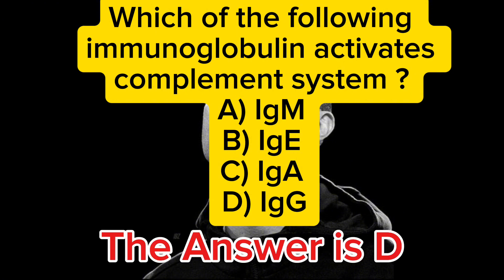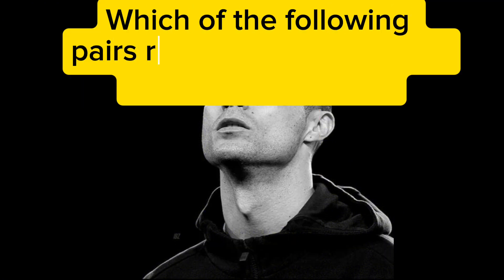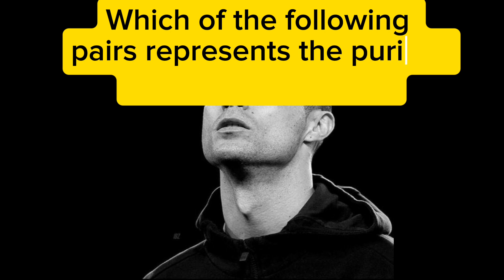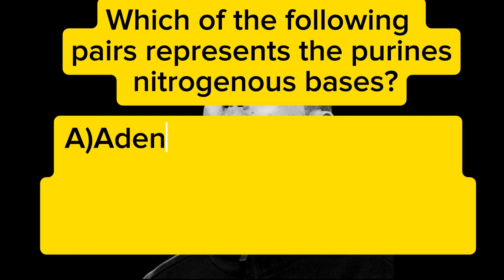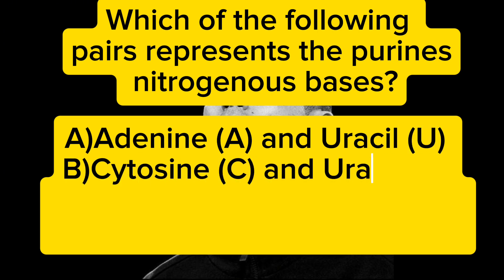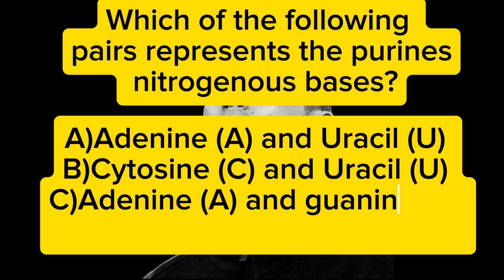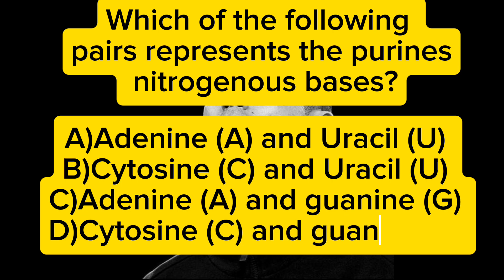Which of the following pairs represents the purine nitrogenous bases? A) adenine and uracil, B) cytosine and uracil, C) adenine and guanine, D) cytosine and guanine. The answer is C — adenine and guanine.